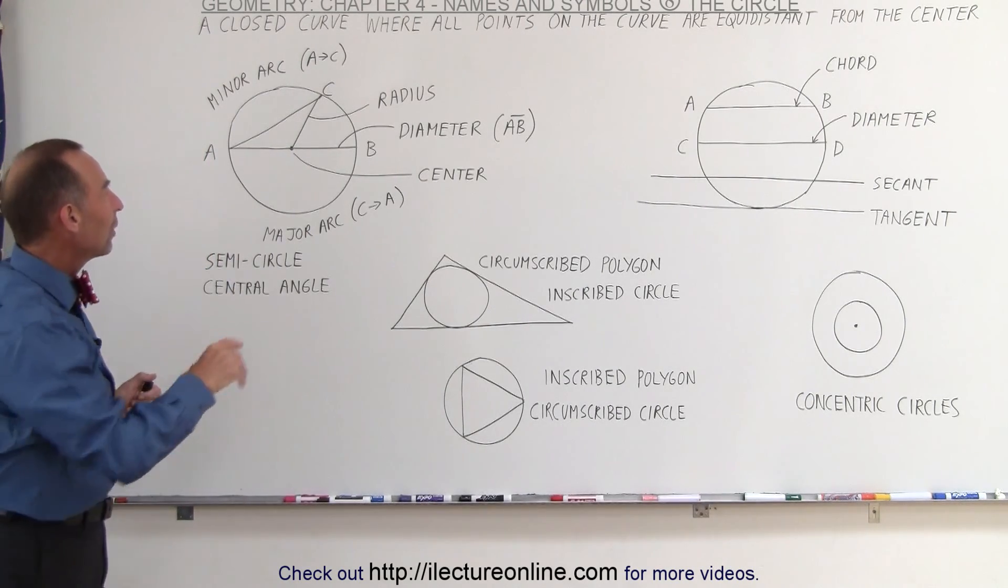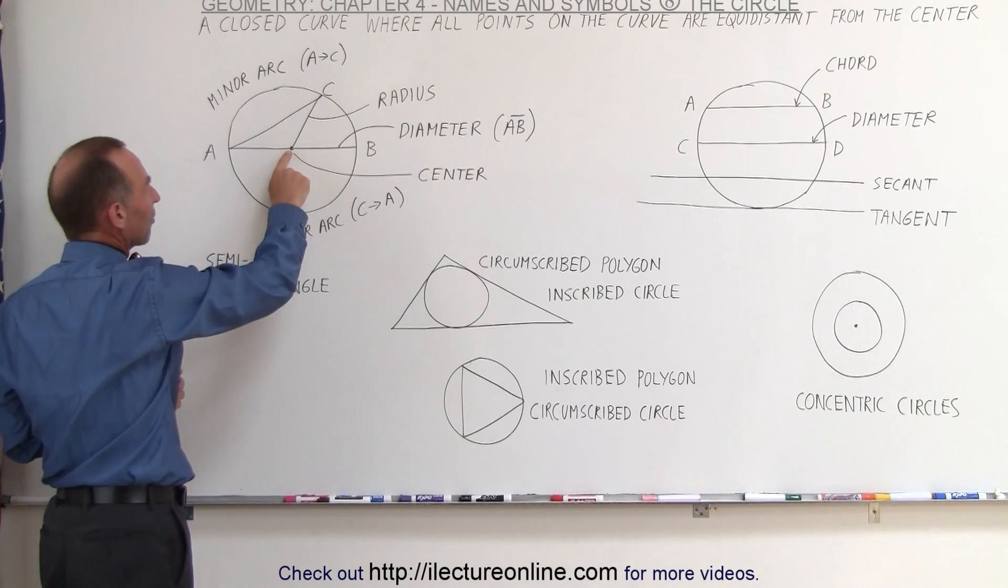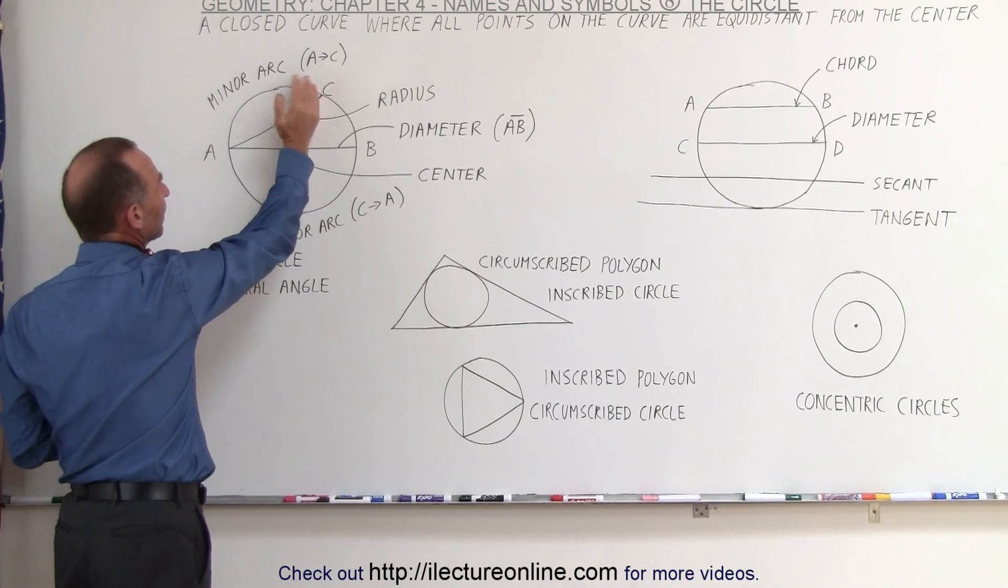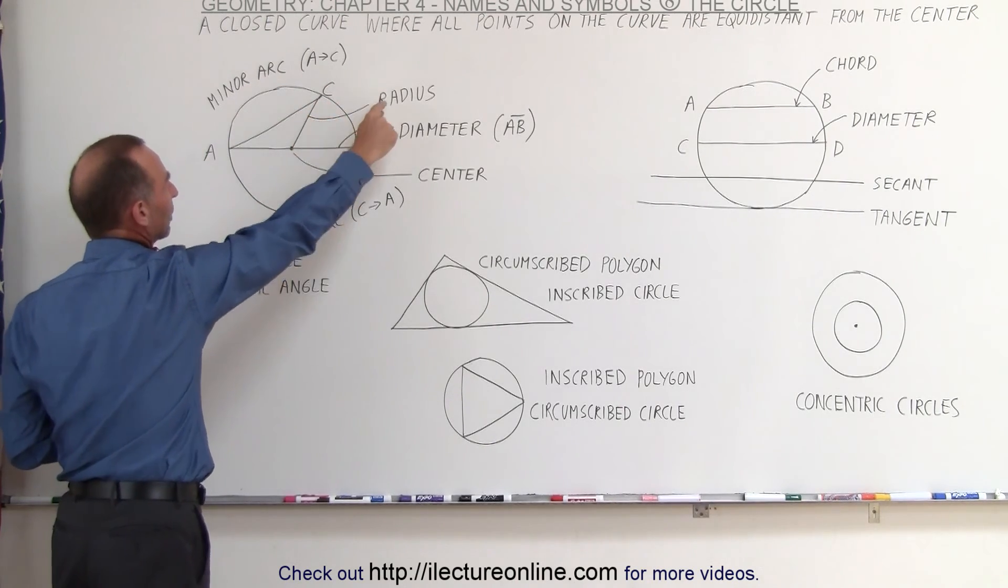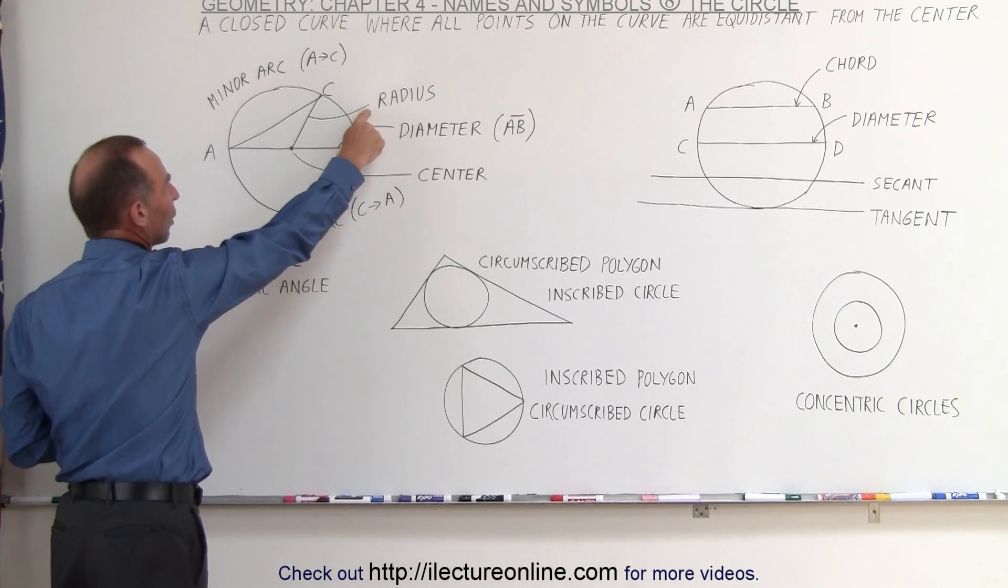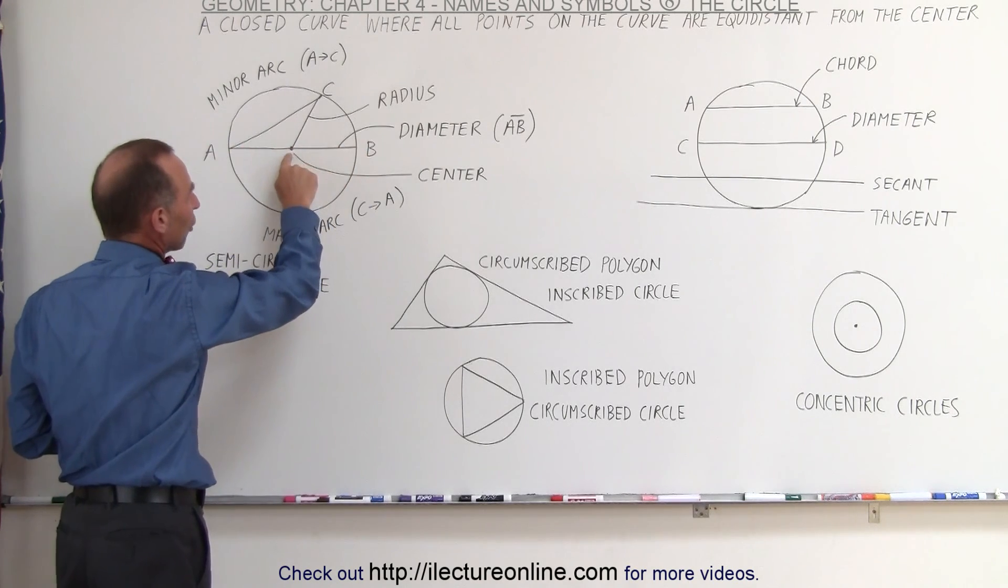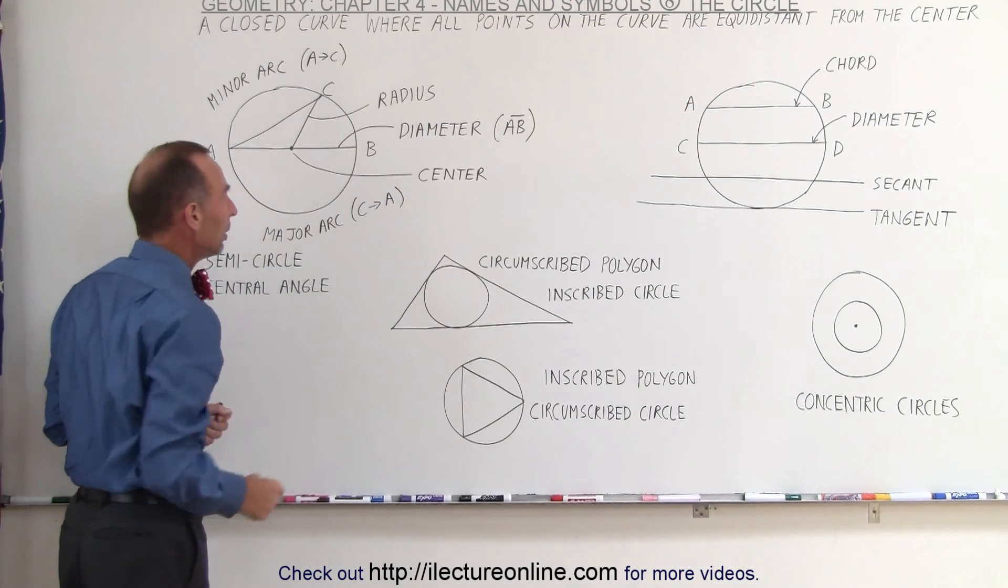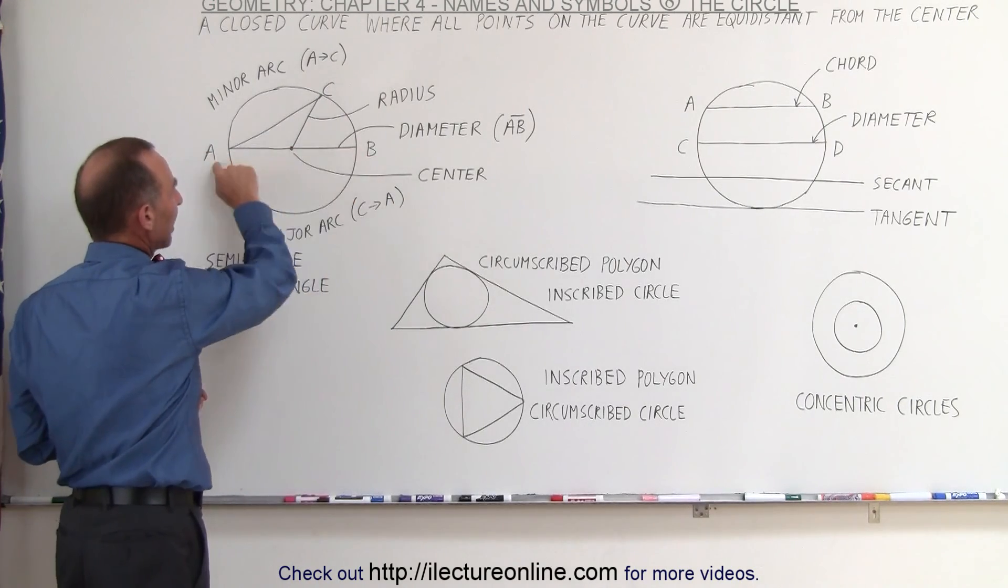Now notice we have a circle here. We have a line drawn from the center to the edge where it reaches the edge perpendicular to the curve. We call that the radius of the circle. When we draw a line all the way through the circle and it also goes to the point right here at the center, this is called the center of the circle, then that's called the diameter from A to B.